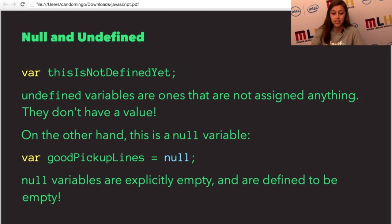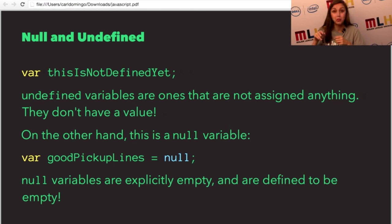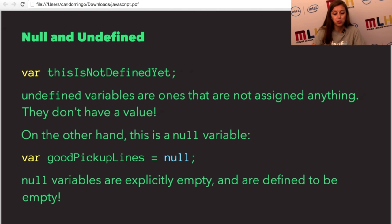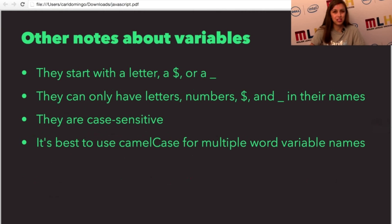There's also null and undefined. If you create a variable but don't assign it anything — for example, var thisIsNotDefinedYet with no equal sign — it's an undefined variable. They just don't have a value yet, but you can assign one later. On the other hand, null variables are actually empty on purpose. They're explicitly empty, so if you had var goodPickupLines equals null, that means that variable is empty on purpose. Variable names can start with a dollar sign, an underscore, or a letter — they cannot start with a number.